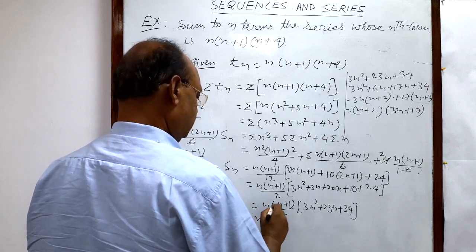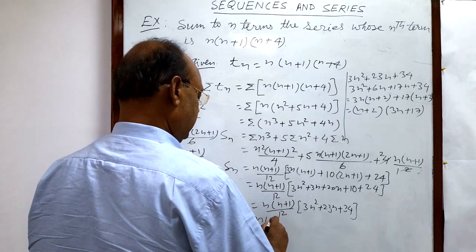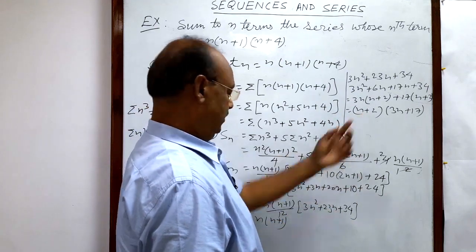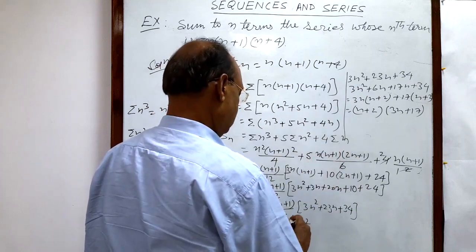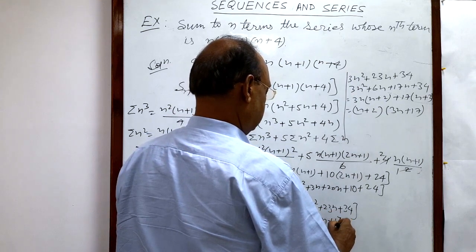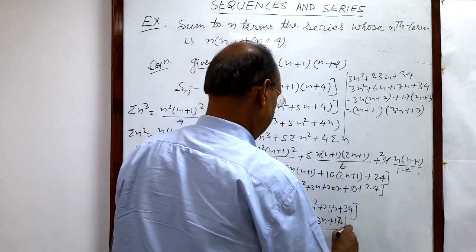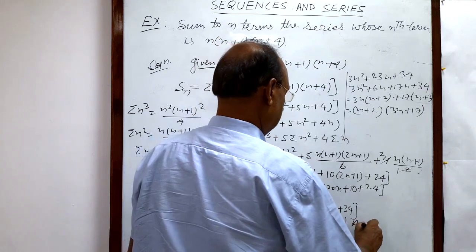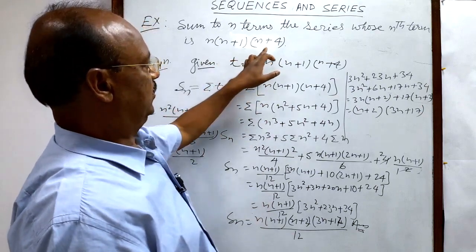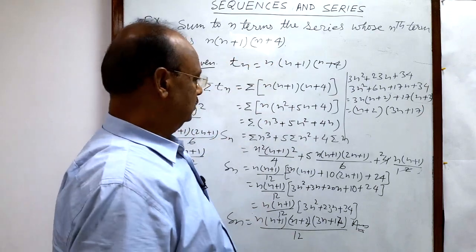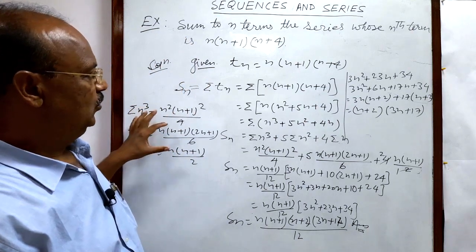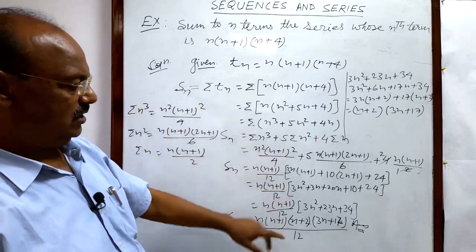Therefore, Sn equals n(n+1)(n+2)(3n+17) divided by 12. This is the answer — the sum of n terms of the series whose nth term is n(n+1)(n+4). You just have to remember the formulas for sigma n, sigma n squared, and sigma n cubed, put in the values, and simplify to get the answer.